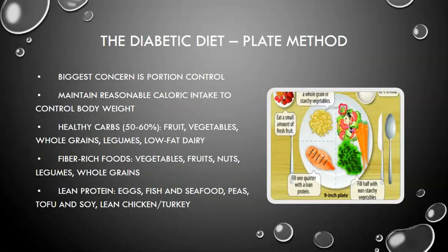The biggest dietary concern is portion control and maintaining reasonable caloric intake. Patients need protein on their plate, smaller amounts of starchy vegetables — since starch converts to sugar — and about half the plate with non-starchy vegetables. Healthy fruits, whole grains, legumes, low-fat dairy, fiber-rich fruits, lean protein, eggs, fish, seafood, and lean chicken or turkey are appropriate choices.